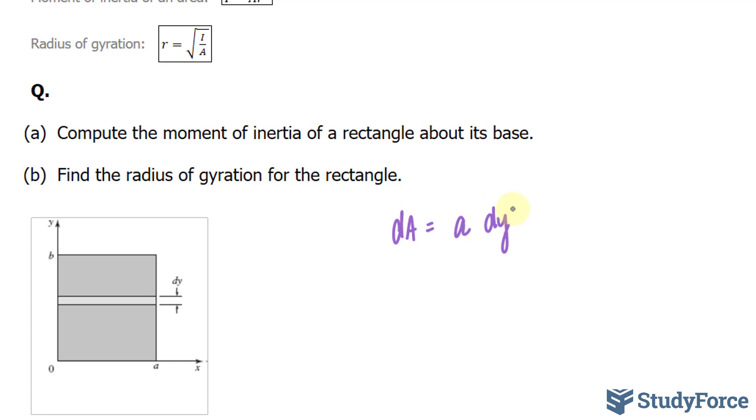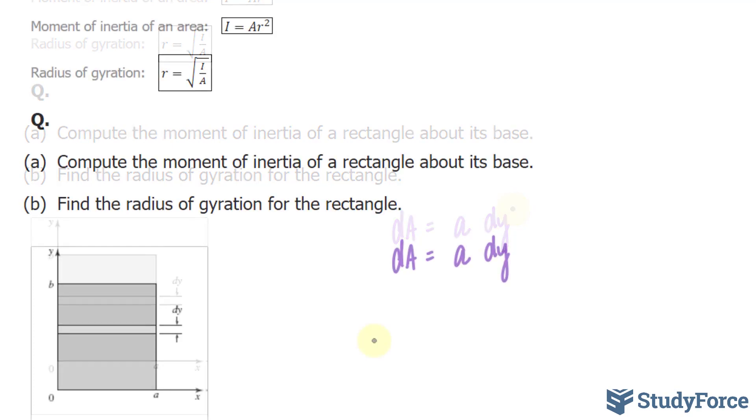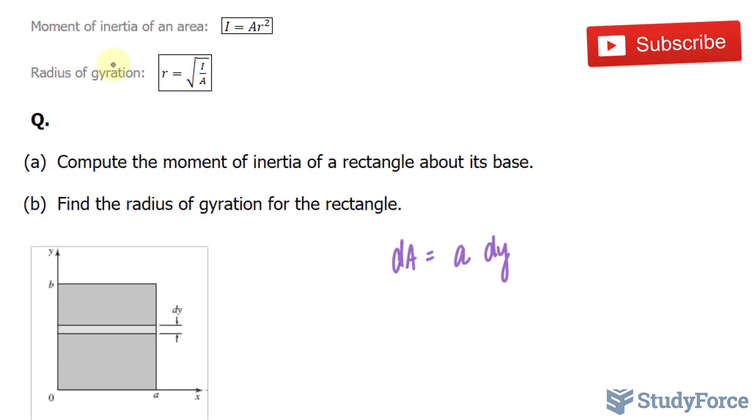All points on this strip are at a distance y from the x axis. So the moment of inertia about the x axis will be represented like this, where we start with this formula, the moment of inertia of an area.